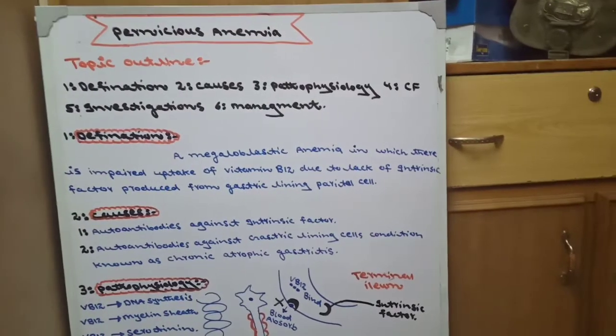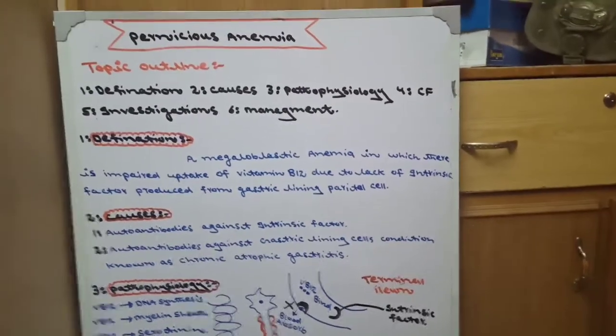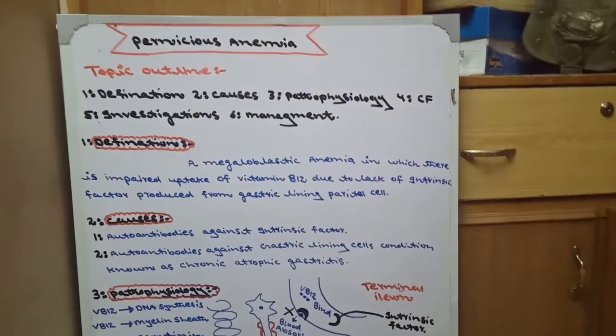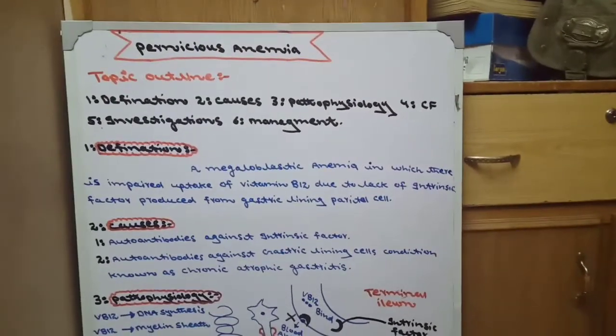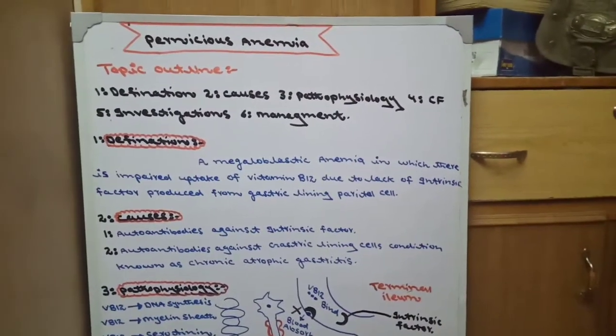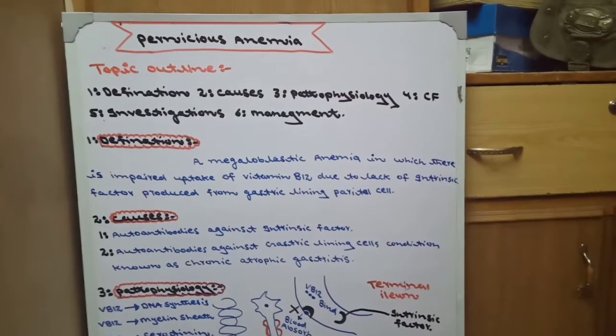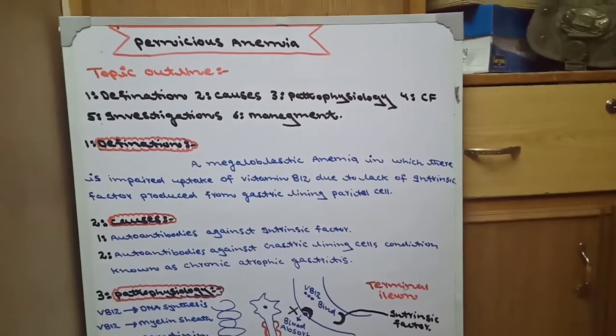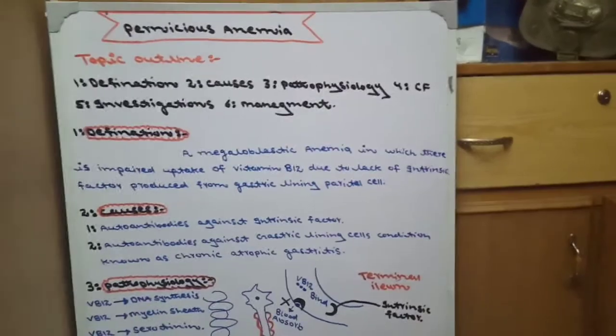It is a megaloblastic anemia in which vitamin B12 uptake from the GIT to the blood is impaired. Why? Due to lack of intrinsic factor. And where is intrinsic factor released from? From gastric parietal cells.